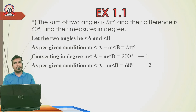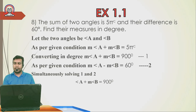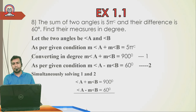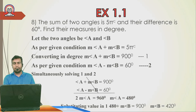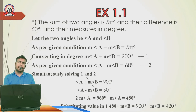Solving Equations 1 and 2 simultaneously: adding them, Angle B cancels, giving 2 × Angle A = 960°, so Angle A = 480°. Substituting into Equation 1: 480 + Angle B = 900, so Angle B = 900 − 480 = 420°. Therefore the two angles are 480° and 420°.